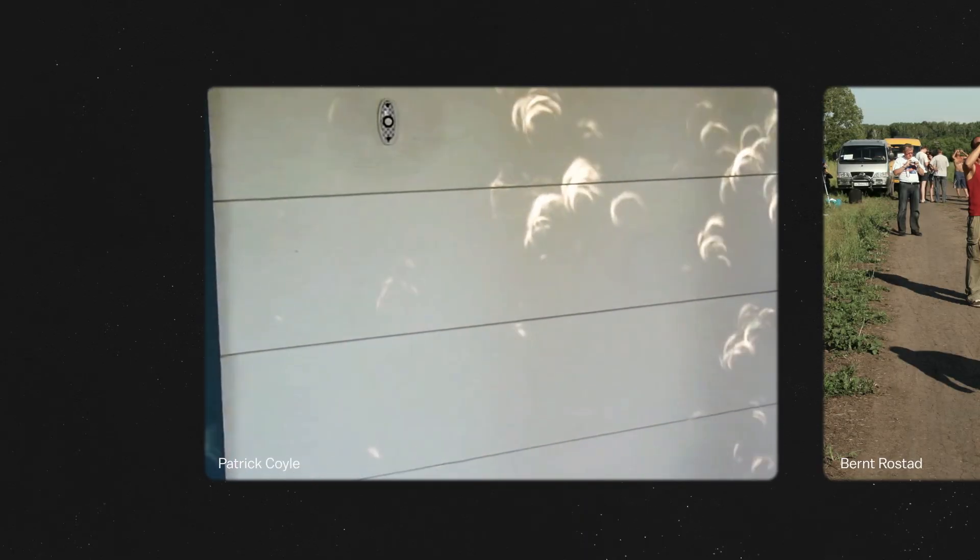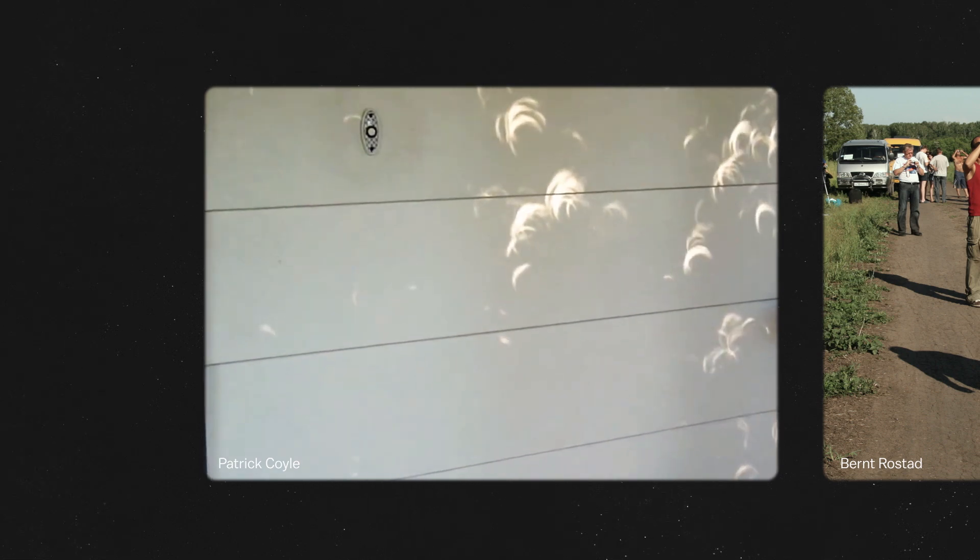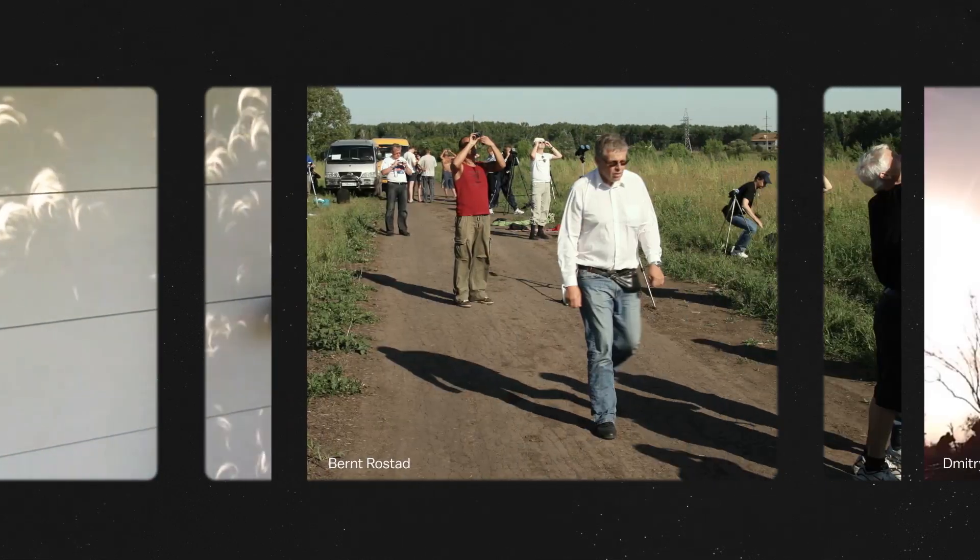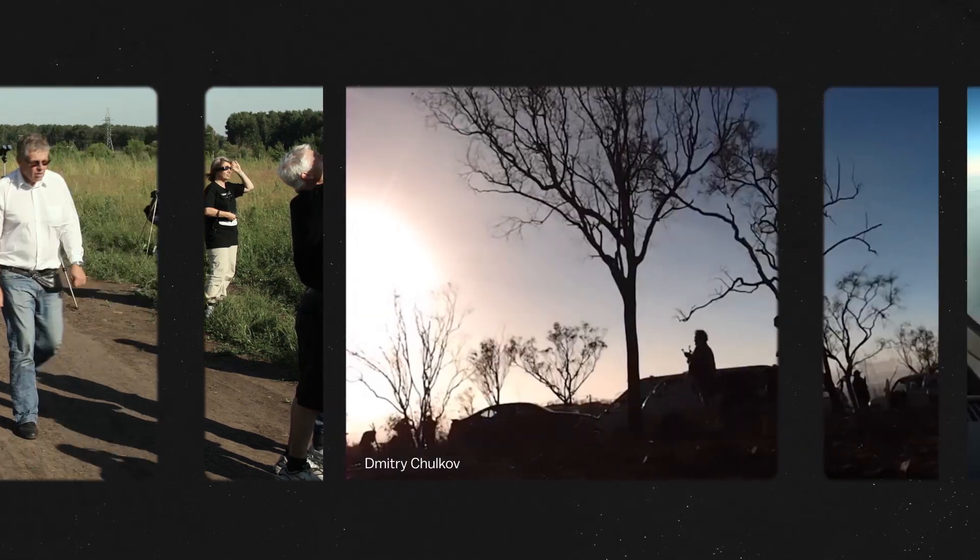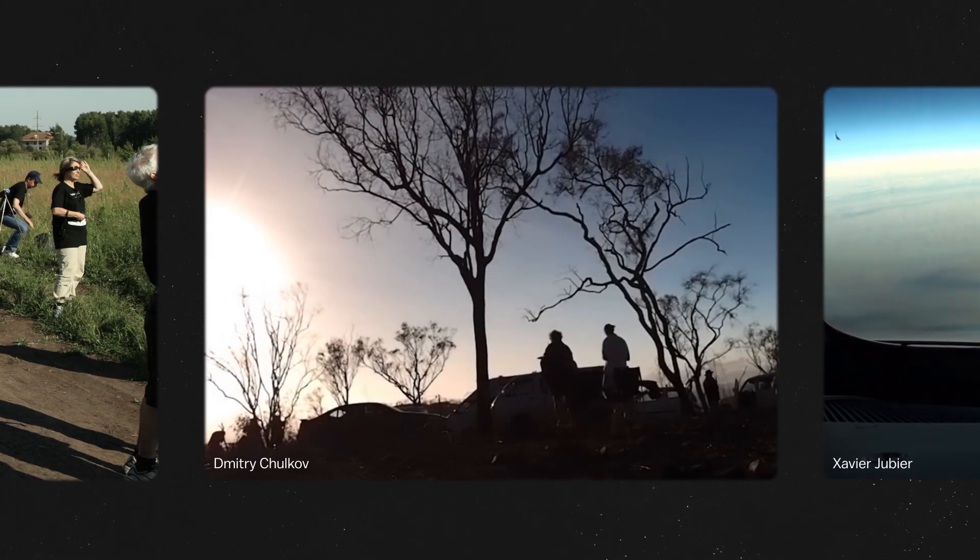A total solar eclipse begins as a partial eclipse. You'll notice trees projecting the crescent sun, and shadows becoming sharper than normal. The landscape darkens to a bluish gray, and you'll start to feel the temperature drop.